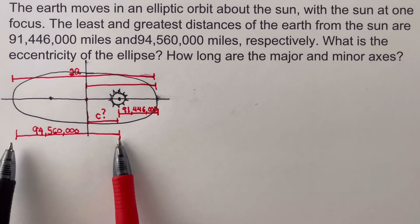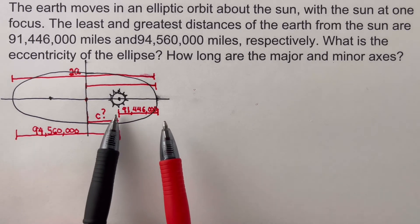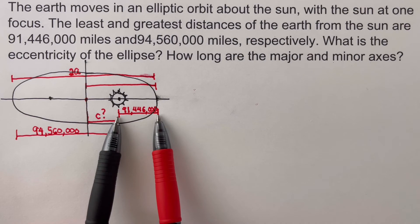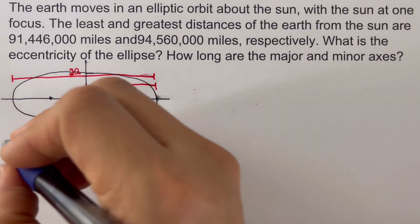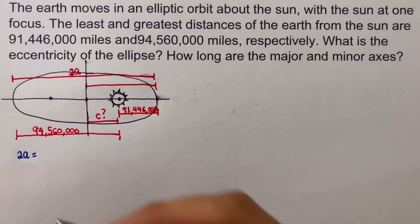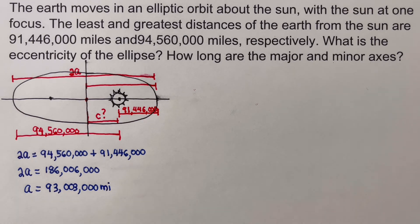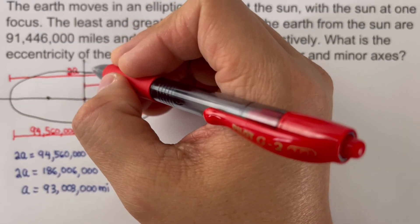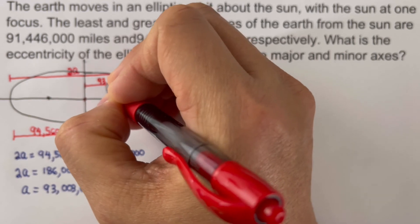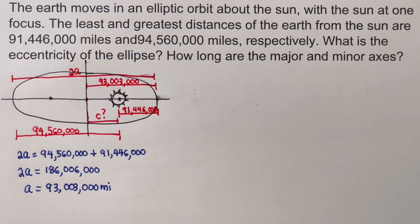We need both a and c to solve for eccentricity. Our value of 2a is the sum of the two given distances, since they span from one vertex through the focus to the other vertex. Doing the math, our value for a is 93,003,000 miles.